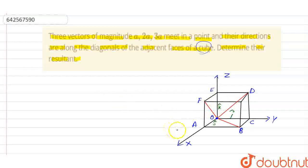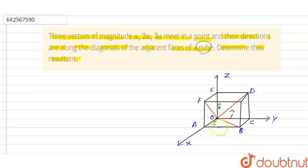Then OB, OD and OF are the diagonals of the faces OABC, OCDE and OEFA respectively, and the side length of the cube is B.